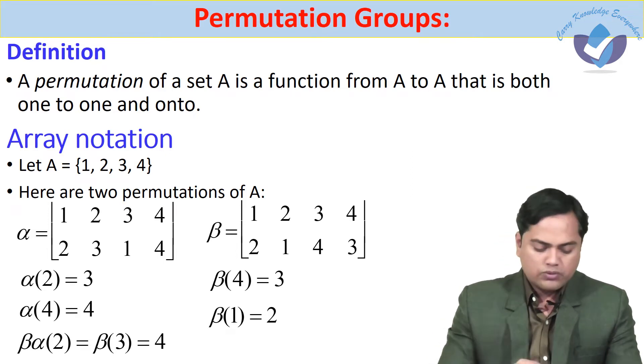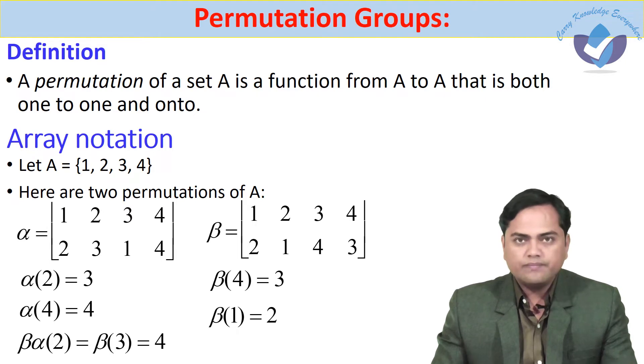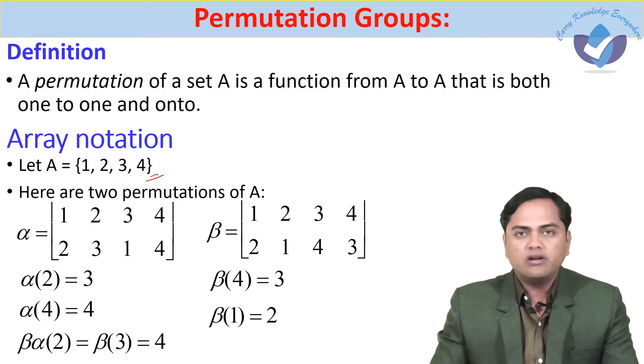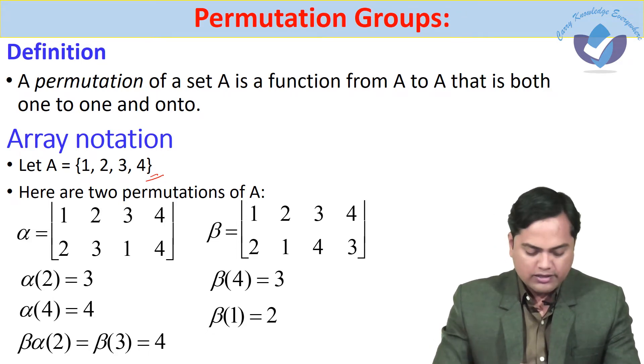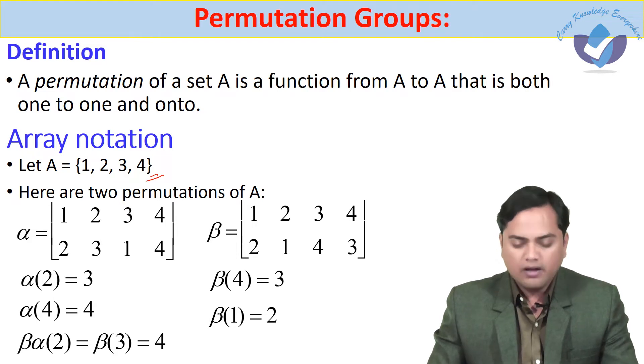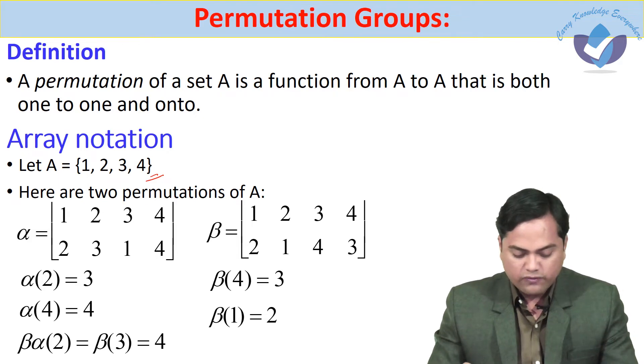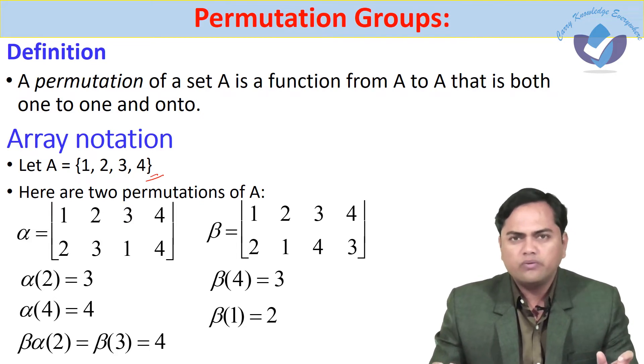Let us look at the notations which we follow: array notation. Set A suppose it contains four elements: 1, 2, 3, and 4. We define two permutations in A. Let the first permutation be defined by alpha and the other one defined by beta. There would be 2 raised to 4, that is 16 different permutations in the group. Out of that, we are only defining two.